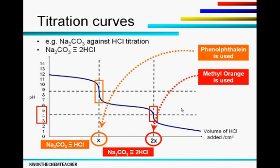We can therefore see when phenolphthalein is being used, it will use half the volume of HCl as compared to when methyl orange is being used. Therefore, when we use phenolphthalein and methyl orange indicators, we will obtain different volumes of HCl at the end. This curve helps to explain why.